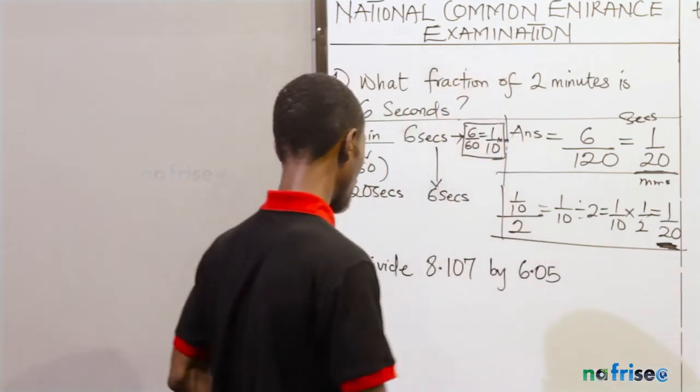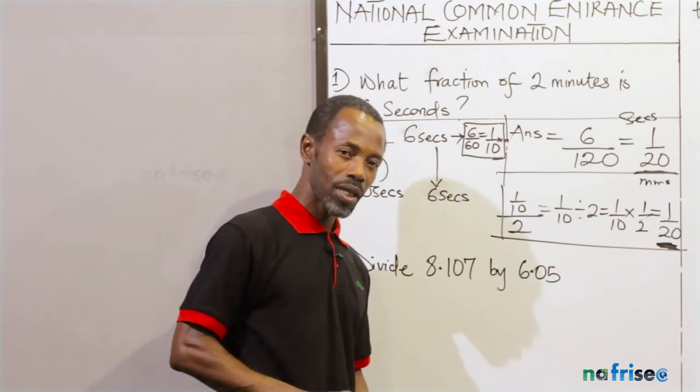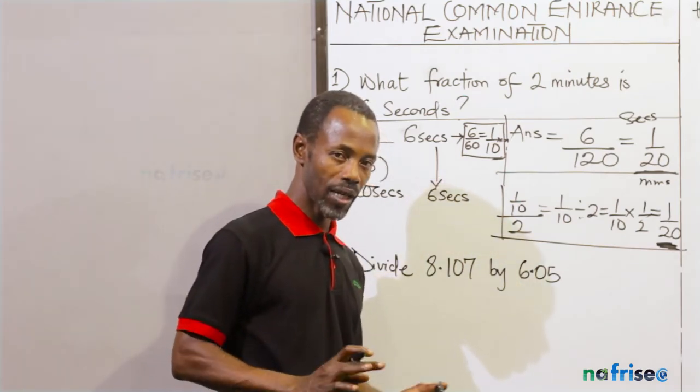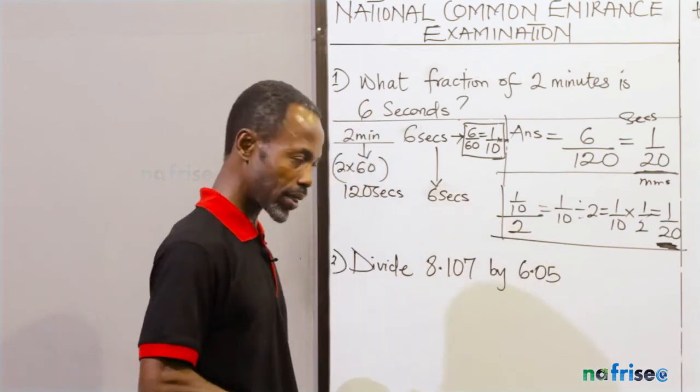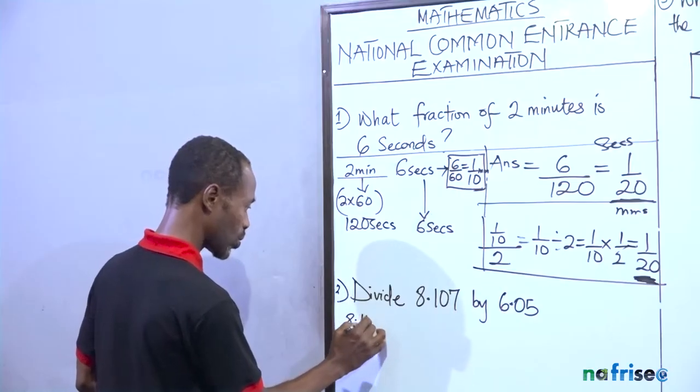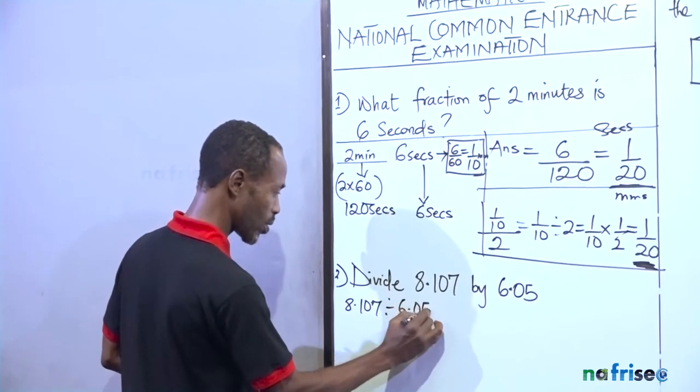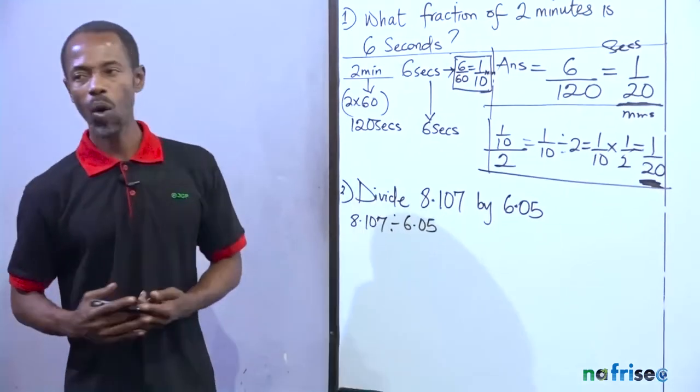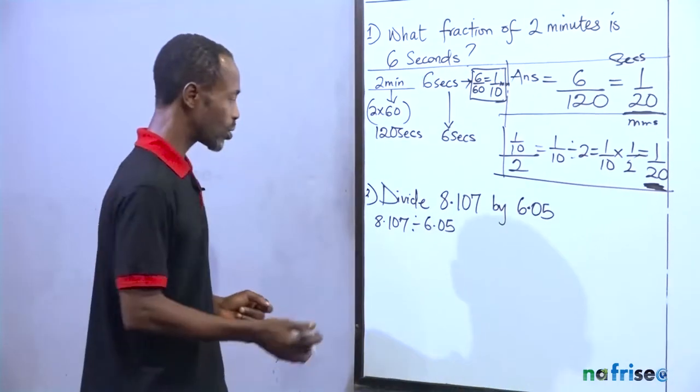Now let's go to number two. Number two question looks scary for a primary five without a calculator in the exam. What would you do when you get to the exam? We have 8.107 divided by 6.05. The first thing first, learn to carry all decimals to fractions. How do you do this?